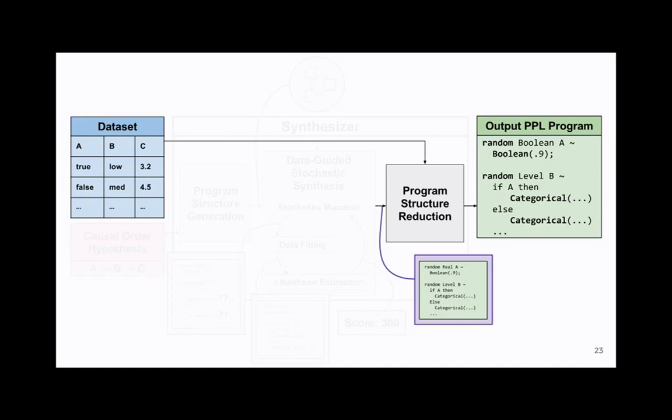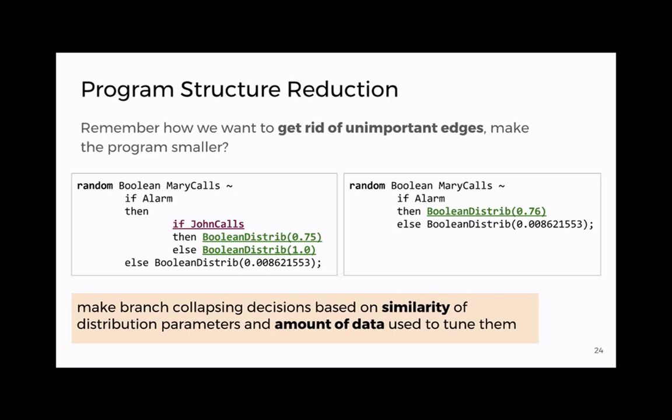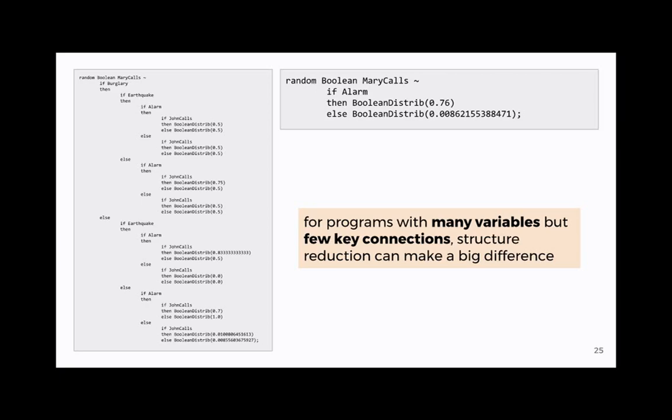And from that we're ready to actually do program structure reduction. The idea here is let's get rid of those unnecessary connections that we didn't actually need. Here we're asking do we actually need to make that distinction on John calls. Whether Mary calls is that actually dependent on whether John calls. In this case the parameters are somewhat similar. They're not super similar. Maybe we wouldn't automatically think that we could collapse those. But if we know that for example one of those was tuned with just two rows of data maybe it was just random chance. Maybe we're willing to collapse it. And so that's how we're making those decisions. How similar are the parameters and how much data was actually used to tune them. And although it may not look like a big difference on this branch-by-branch basis once we get to the whole program it's actually making a pretty big difference and we're actually getting rid of a lot of those unnecessary connections which makes much nicer cleaner models.